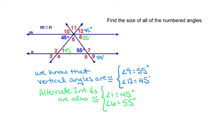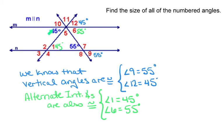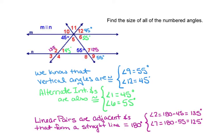And then next, we want to find the alternate interior angles to 45 and 55. So 45 is right here. Its alternate interior angle is going to be this one down here, angle 1. So angle 1 is going to equal 45 degrees. And the alternate interior angle to 55 is angle 6, so that's going to be 55 degrees.